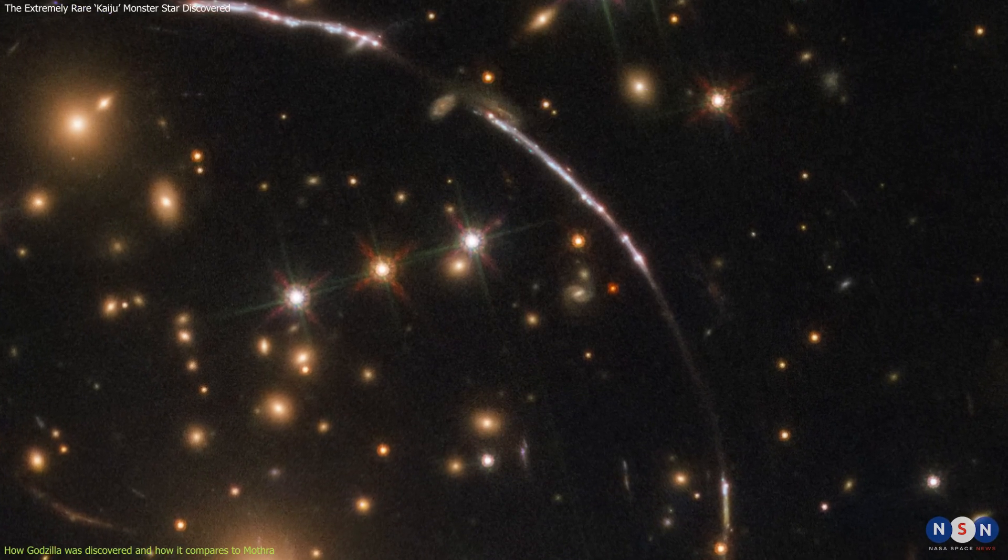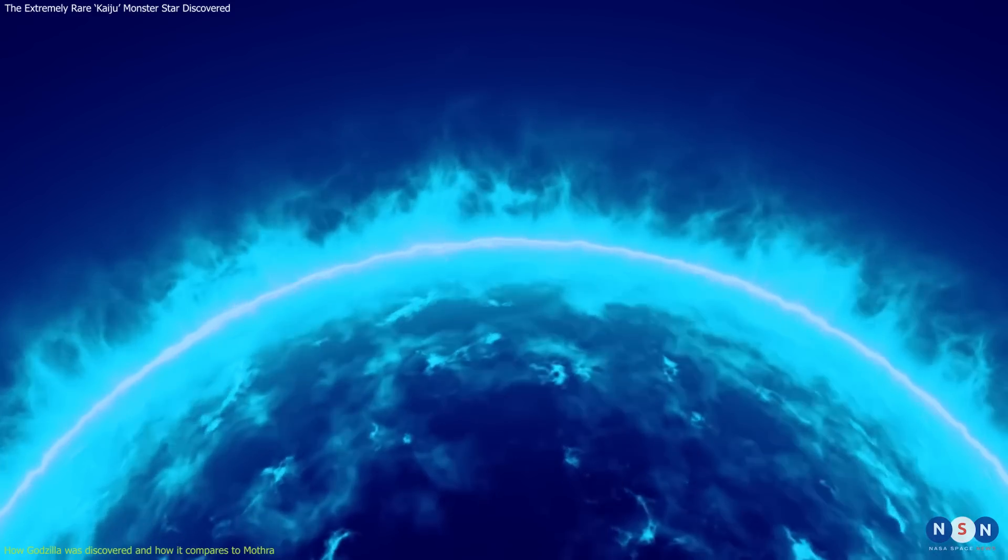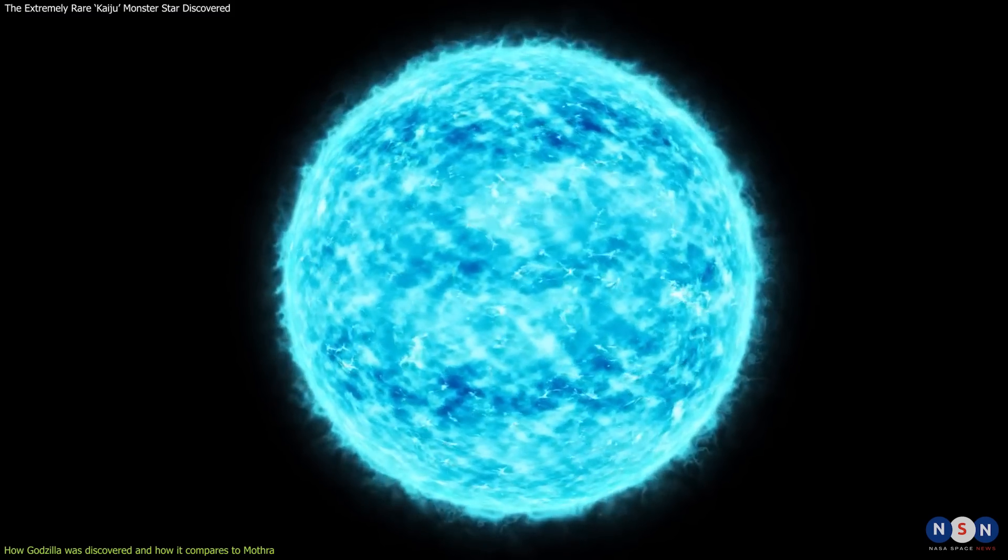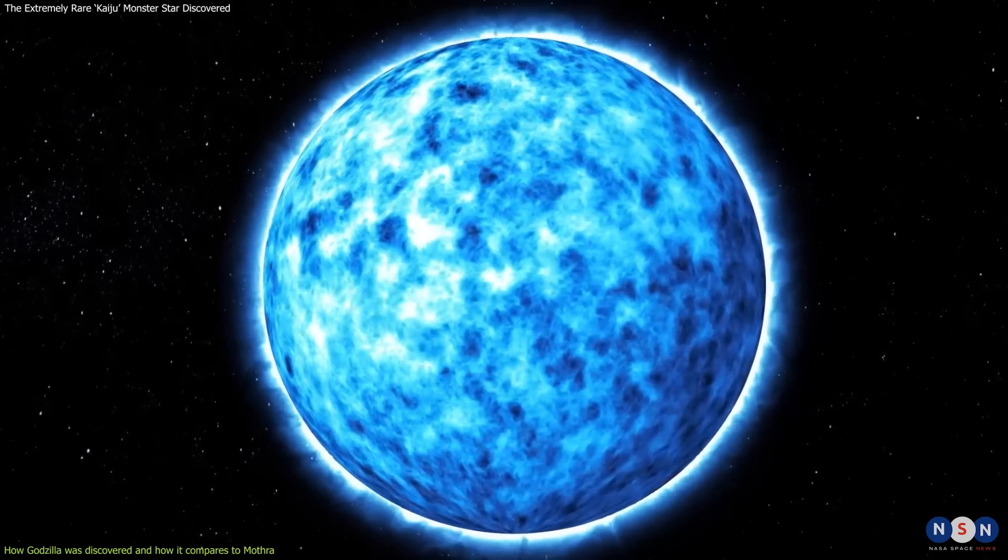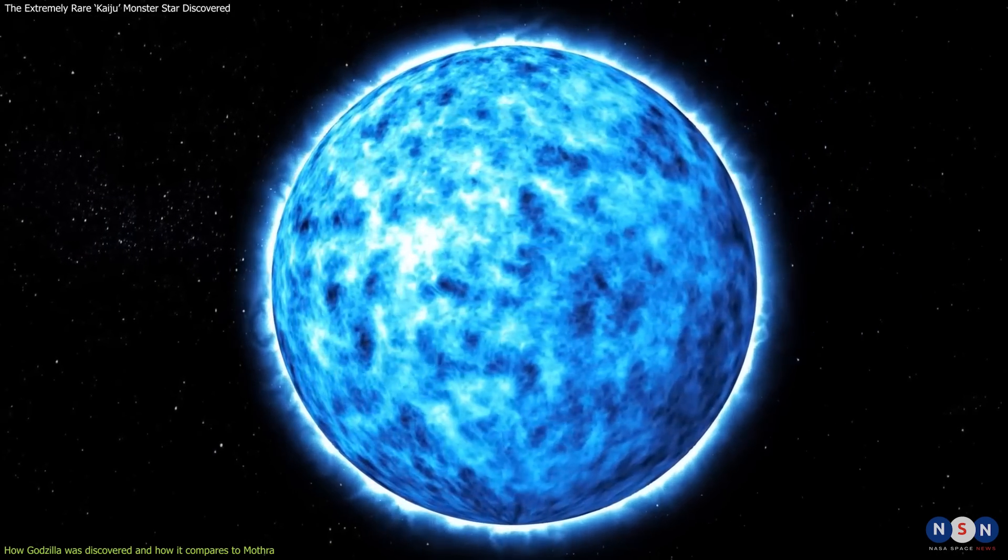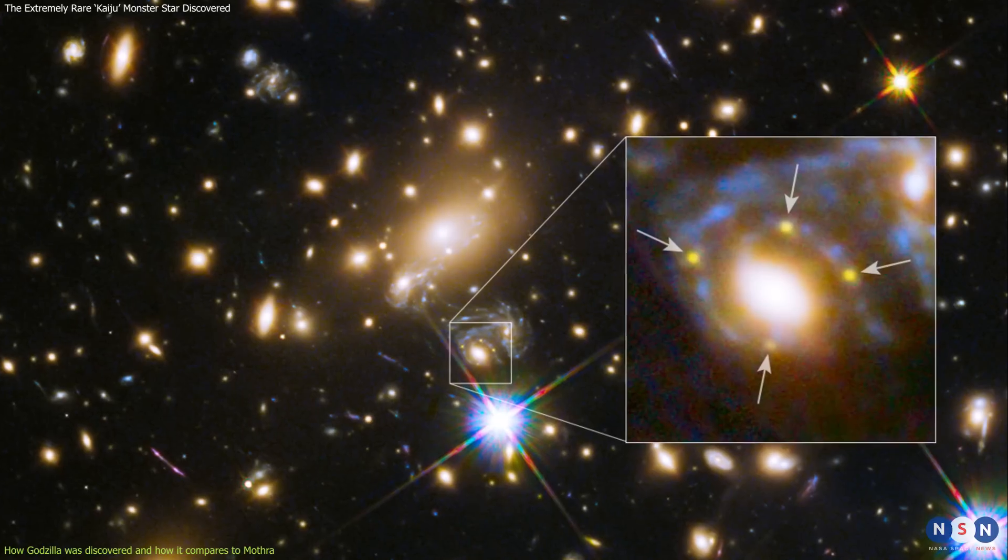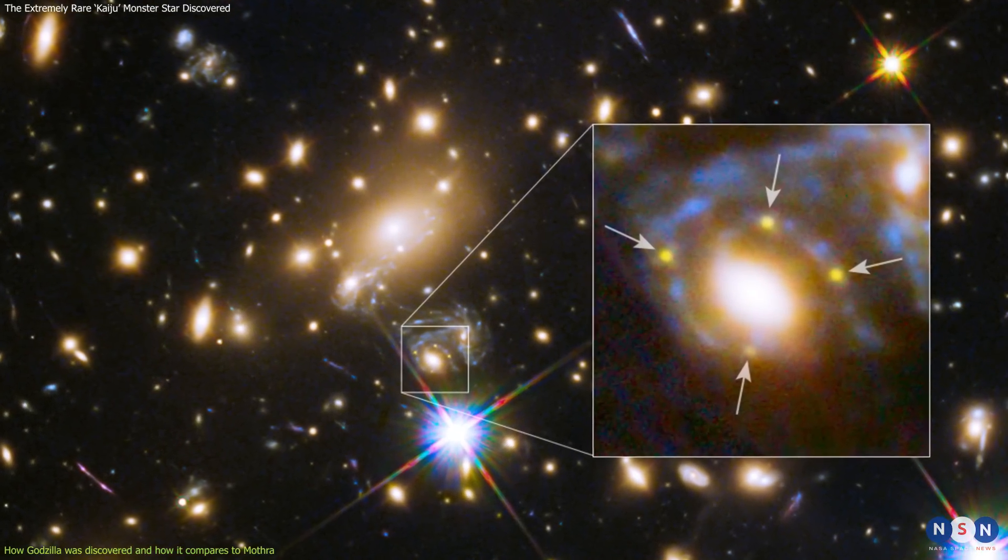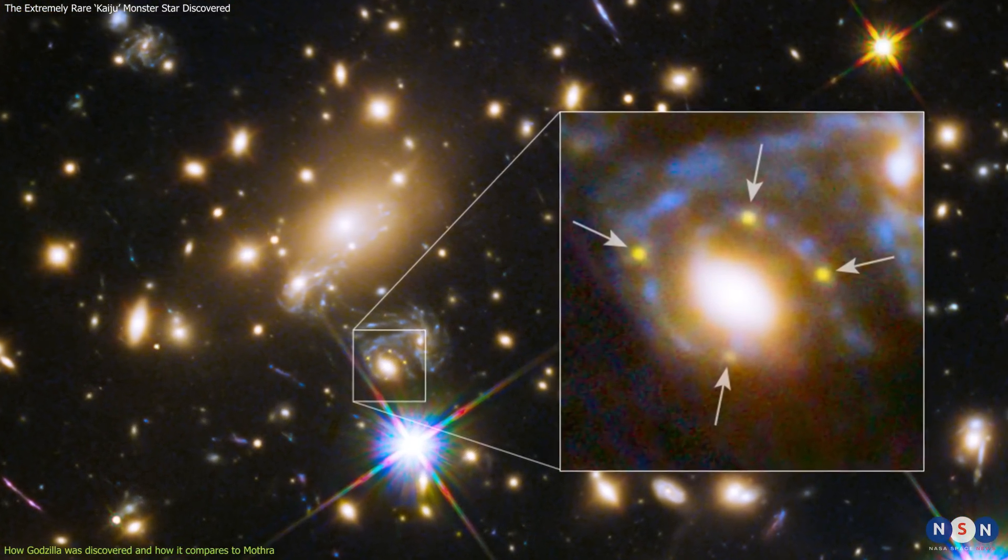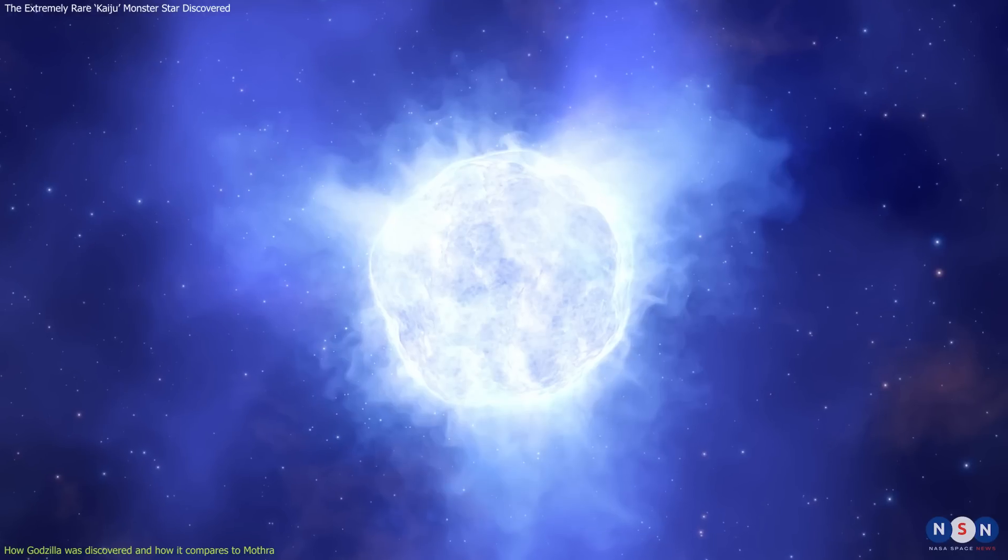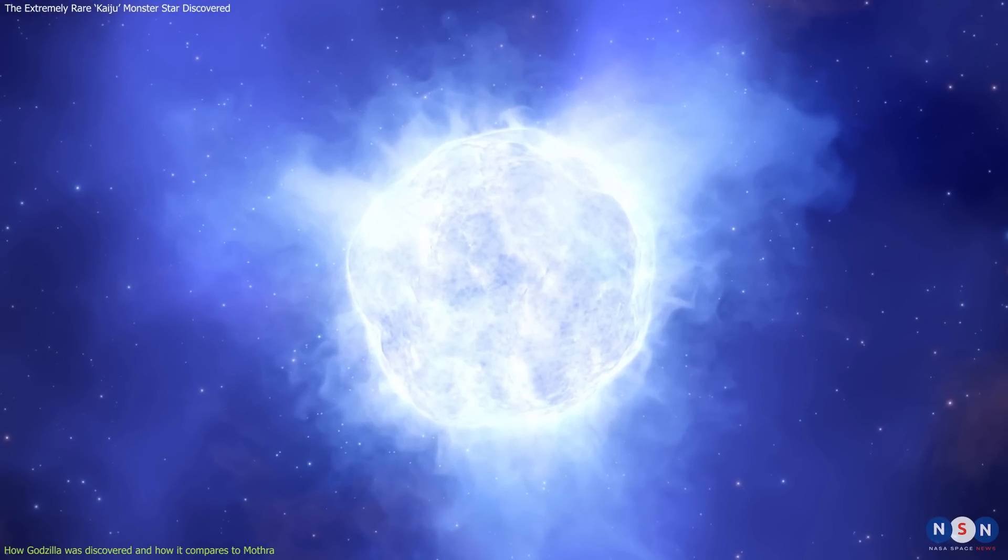However, this star is also more extreme than most blue supergiants because it has a very high surface gravity and a very low metallicity. These features make it very stable and long-lived compared to other blue supergiants. Godzilla is also very unusual because it does not seem to have any companion stars or planets around it, which is uncommon for such massive stars.